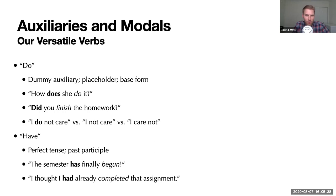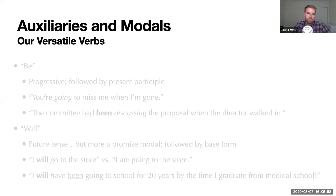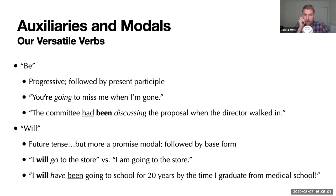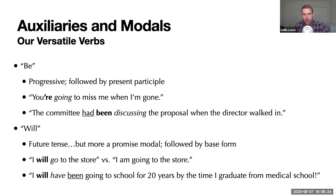Have is another auxiliary verb. We use it with the past participle to create the perfect tense. Notice that it is the auxiliary verb have — like the dummy auxiliary do — that is tensed, taking the present or past tense. To be is used with the present participle to create the progressive tense. The progressive participle can then be tensed past or present based on what tense the to-be verb is, and with the auxiliary will it can be future tense as well — for example, 'you're going to miss me when I'm gone' or 'the committee had been discussing the proposal when the director walked in.'